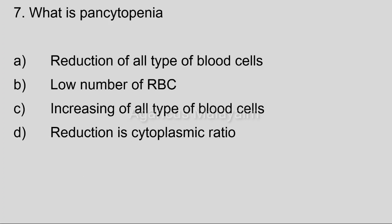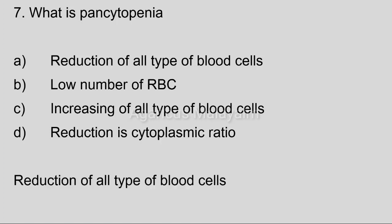Seventh question: What is pancytopenia? Option A: reduction of all type of blood cells. Option B: low number of RBCs. Option C: increase of all type of blood cells. Option D: reduction in cytoplasmic ratio. Correct answer: Option A, reduction of all type of blood cells.